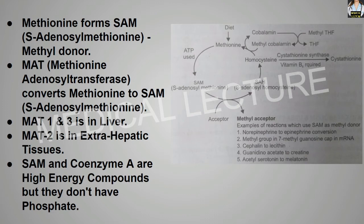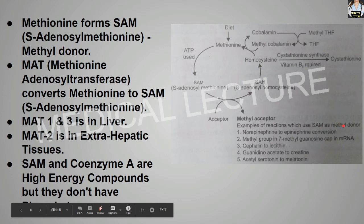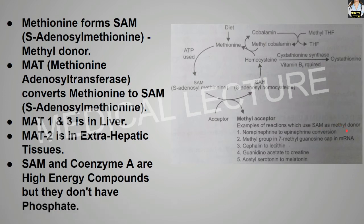S-adenosylmethionine and coenzyme A are highly energetic compounds but do not have phosphate. SAM is used in the conversion of norepinephrine to epinephrine. The methyl group in the 7-methylguanosine cap in mRNA is donated by SAM. SAM is also used for conversion of cephalin to lecithin, guanidinoacetate to creatine formation, and acetylserotonin to melatonin conversion.